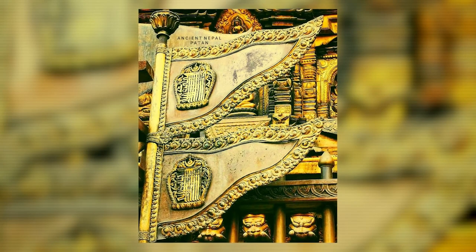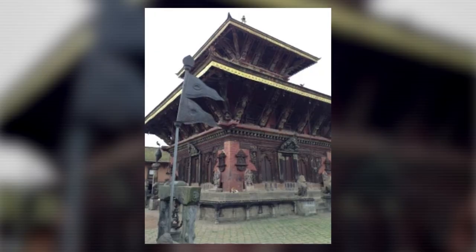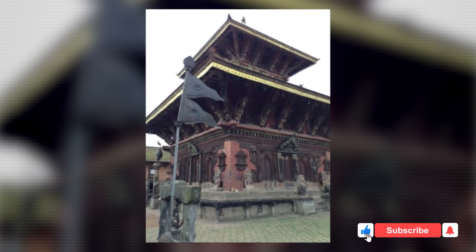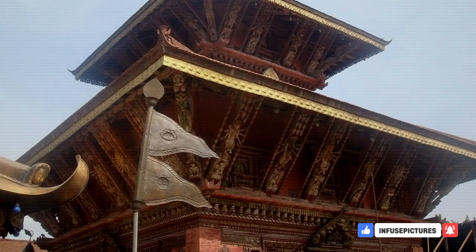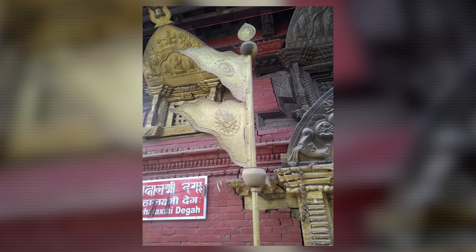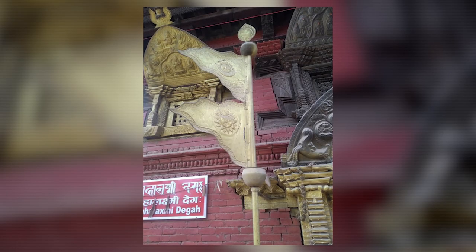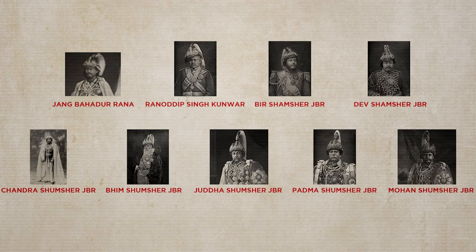There is evidence that the flag of Nepal has been in use since before the time of Prithvi Narayan Shah. An example is the metal image of the flag of Nepal in the Changu Narayan temple in Bhaktapur, which has been kept since the time of king Mandev. Therefore, even though Prithvi Narayan Shah was the one who popularized the flag, its use had been going on since before him.